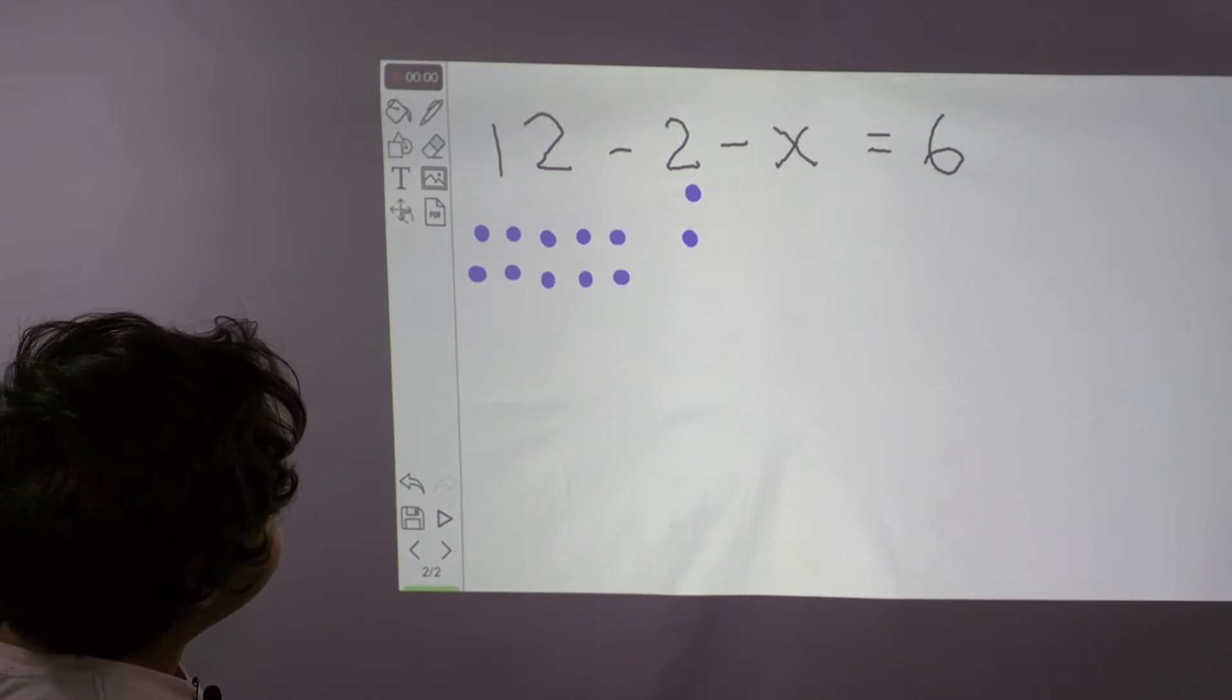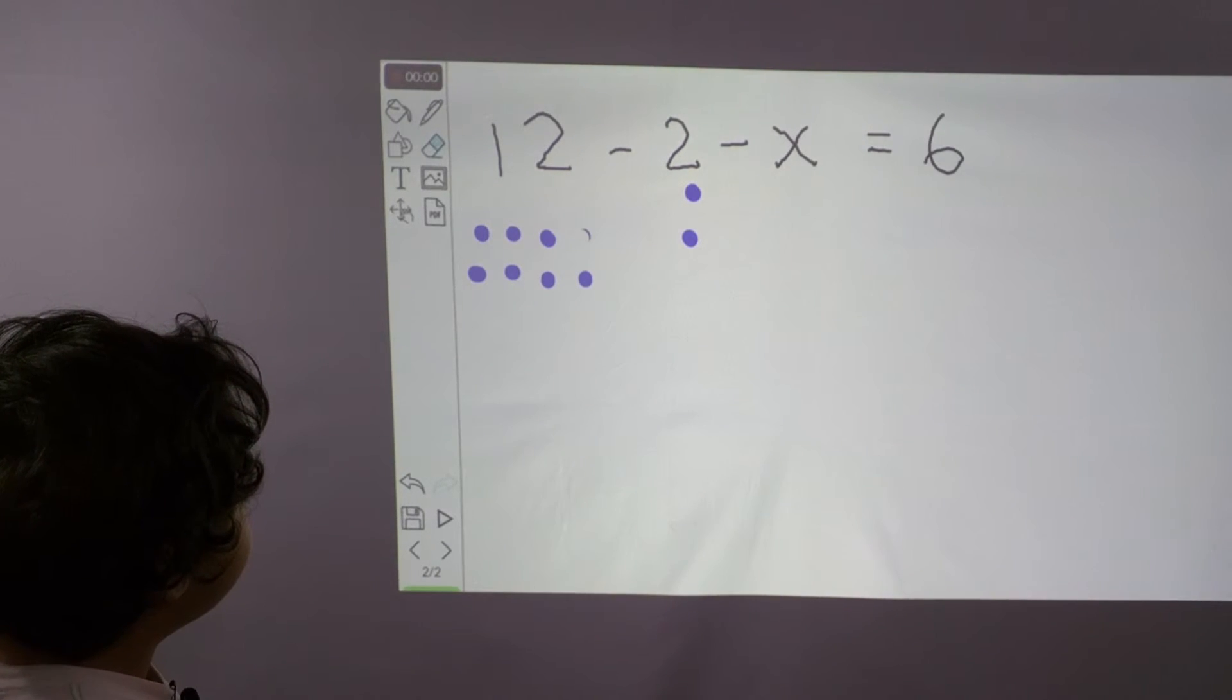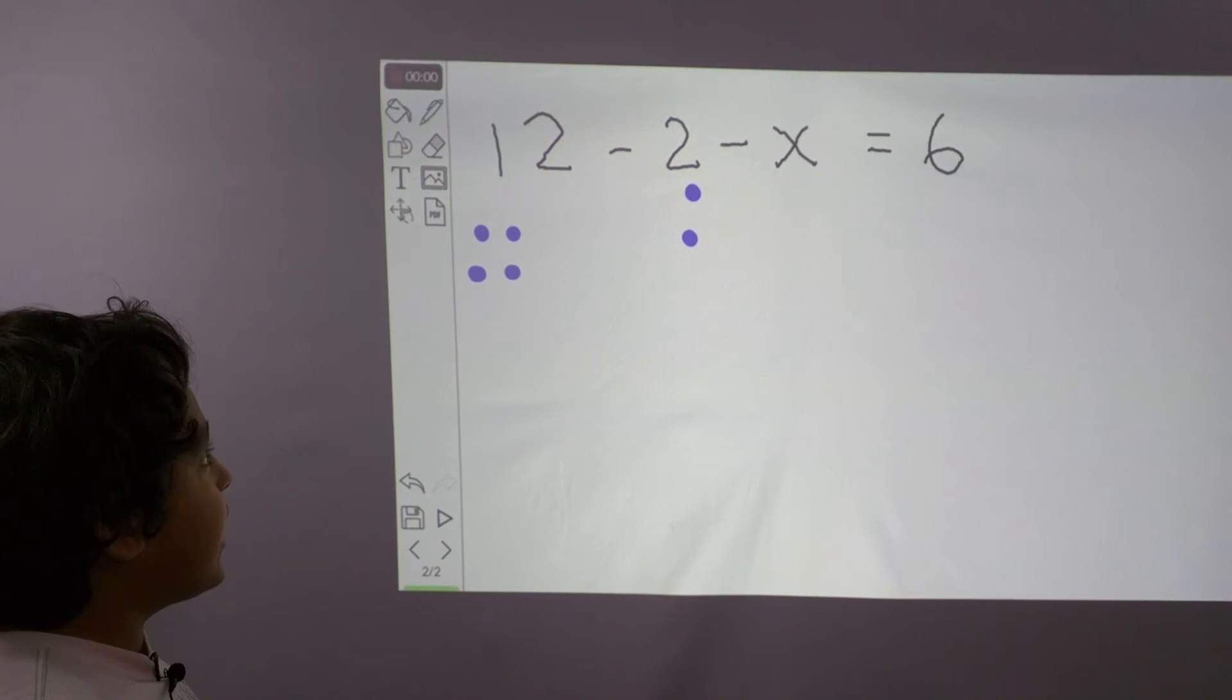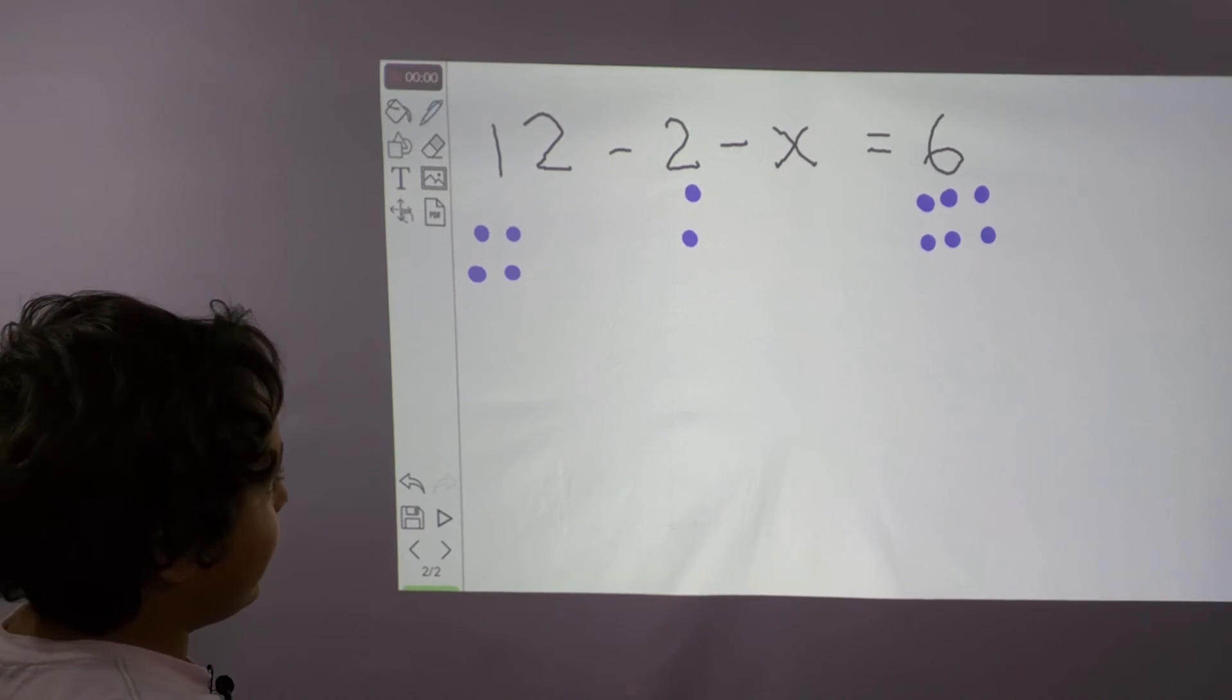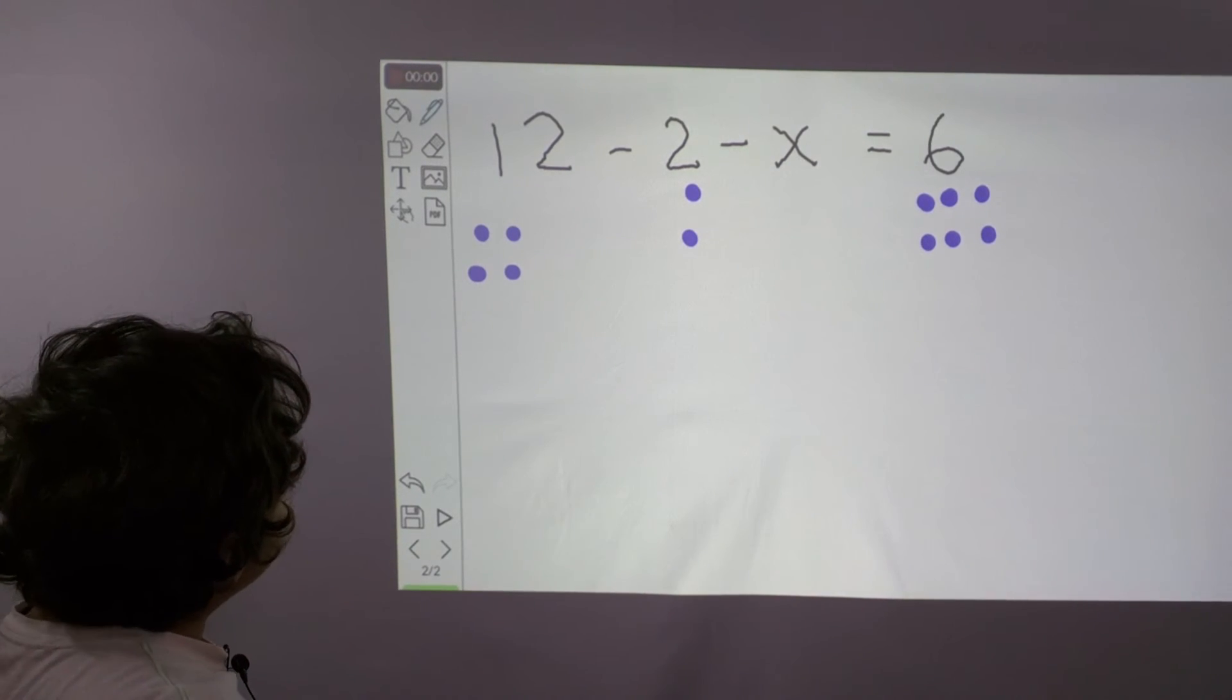And now we're going to erase 6. 1, 2, 3, 4, 5, 6. And now we're going to put those 6 dots under the 6. 1, 2, 3, 4, 5, 6. And your answer is 4.